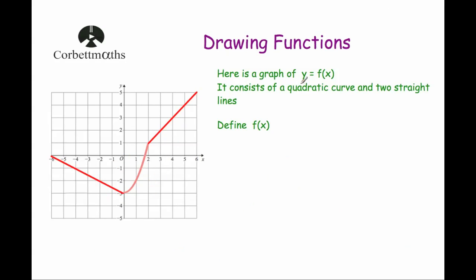Our last question says: here's a graph of y equals f of x consisting of a quadratic curve and two straight lines. We need to define f of x including stating the domain. The first line goes from negative 6, 0 down to negative 3, so its gradient is negative 3 divided by 6 which equals negative one half. The equation is negative one half x minus 3, for x bigger than or equal to negative 6 but less than 0.